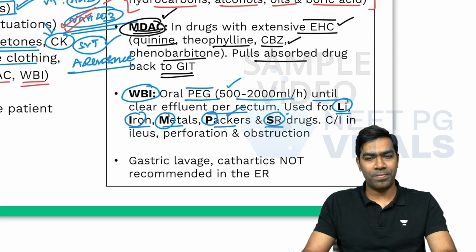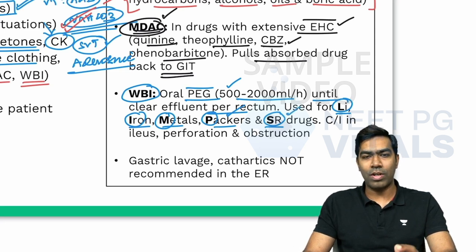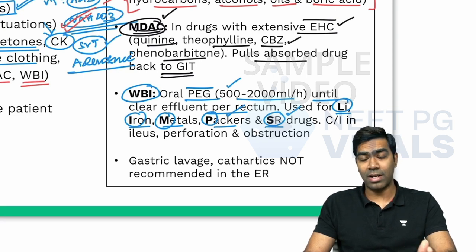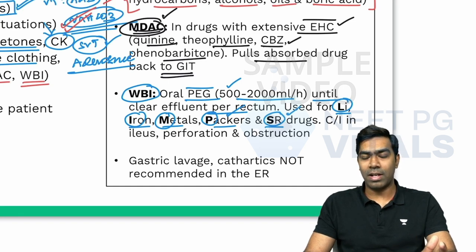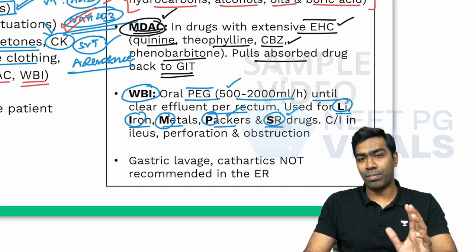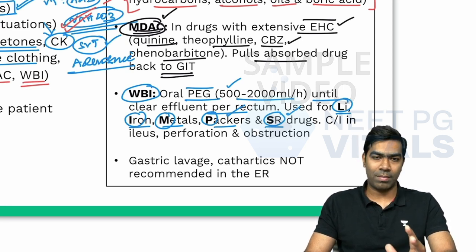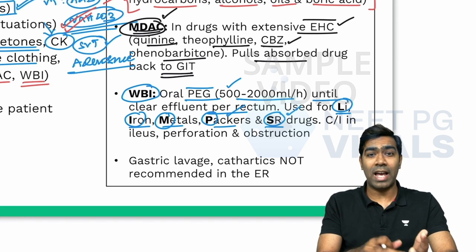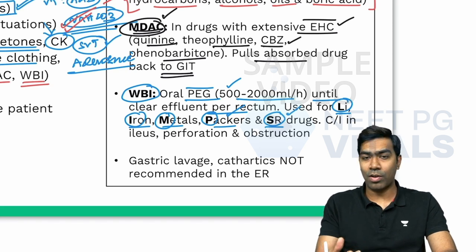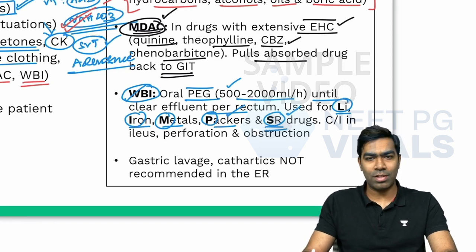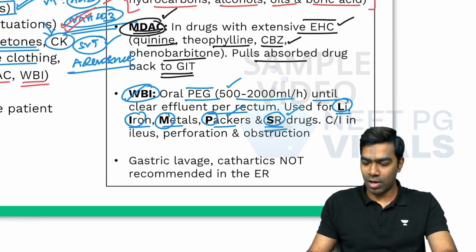For sustained release preparations, there is no rapid drug release — it happens slowly over a long period of time. There is always a proportion of drug left unabsorbed in the GIT for a prolonged period, so you target that unabsorbed portion and try to remove it via whole bowel irrigation. That's why it is very helpful for sustained release preparations.